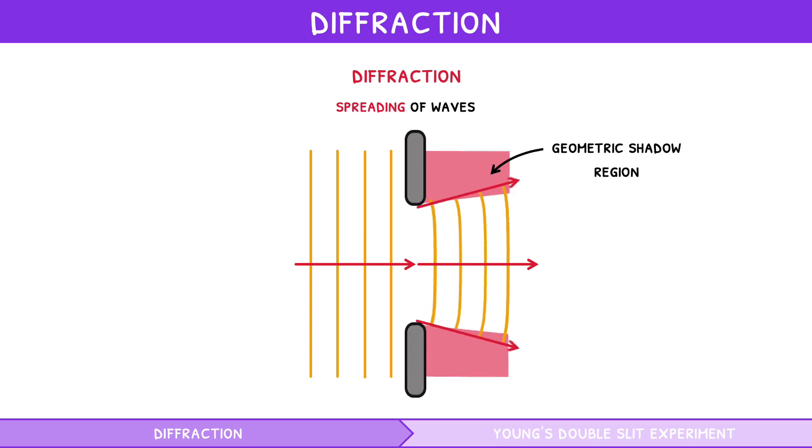This is because as the slit becomes larger, there is more space for the wave to pass, and so smaller portions of the wave are redirected.